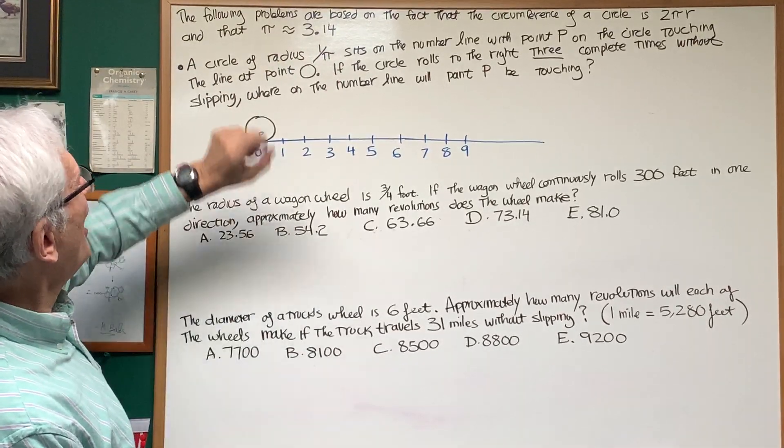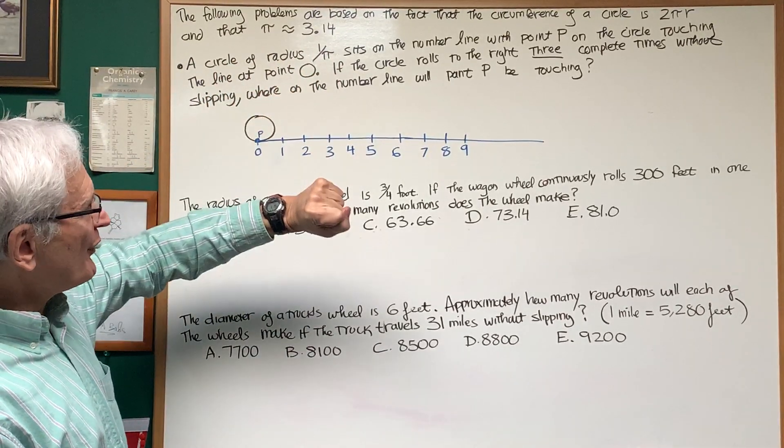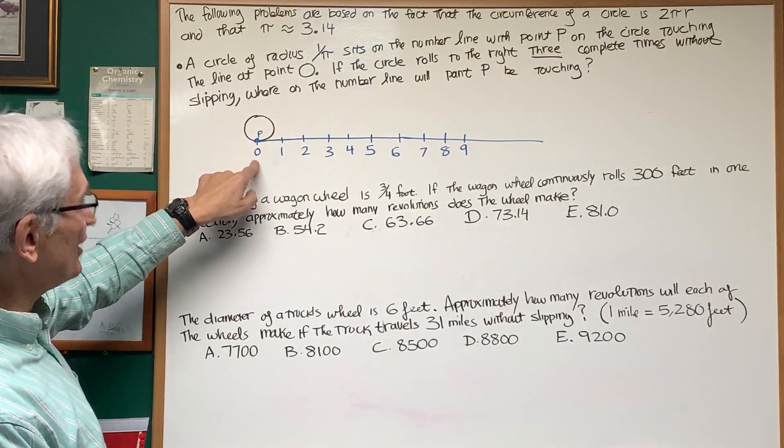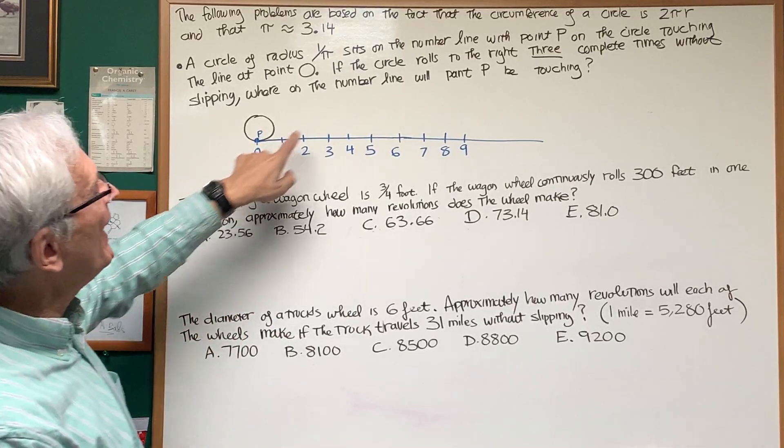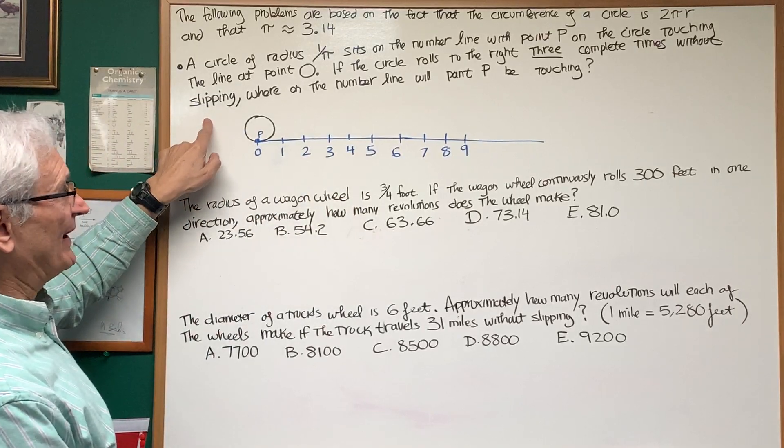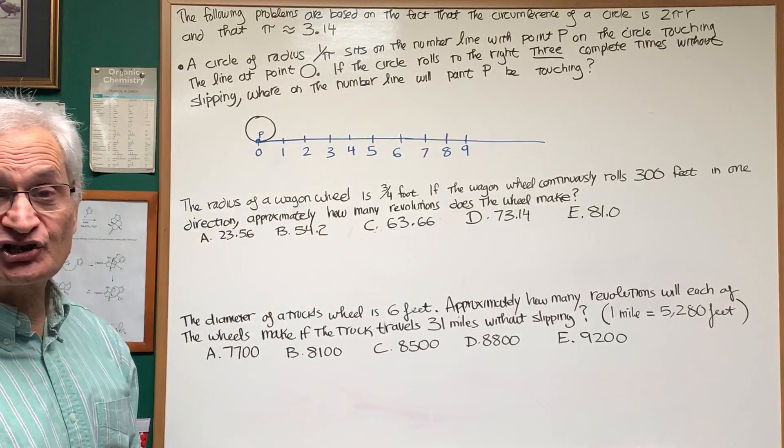Let's look at the first problem. A circle of radius 1 over π sits on the number line with point P on the circle touching the line at point 0, as shown in the diagram. If the circle rolls to the right three complete times without slipping, where on the number line will point P be touching?